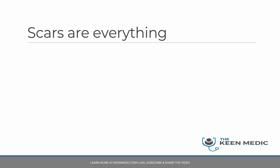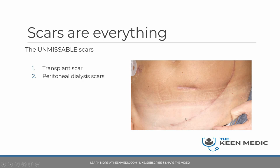Let's talk about scars because they are very important. You need to know what each scar is, what it looks like, where it is, and the significance of it. One of the most prominent scars is the renal transplant scar, also called the hockey stick scar. It is in the iliac fossa — either right or left — and underneath it you can feel the transplant. If functioning, it should not be tender, the skin should look healthy, and the scar should be healed.